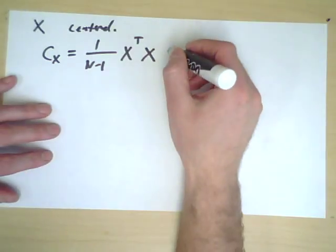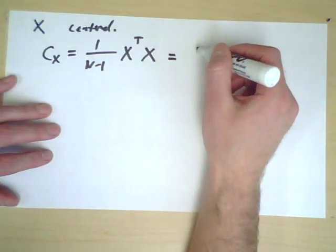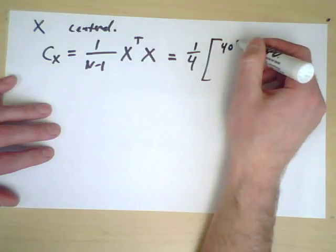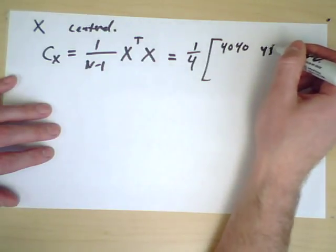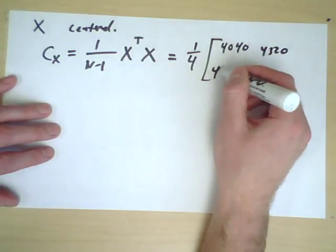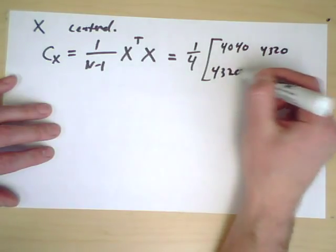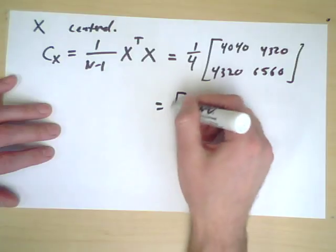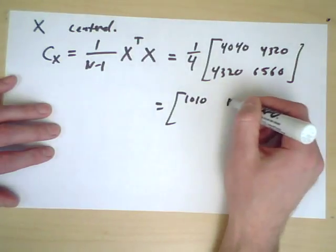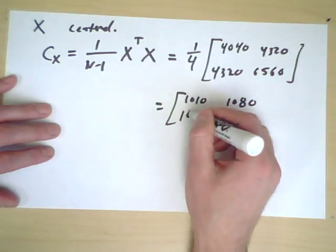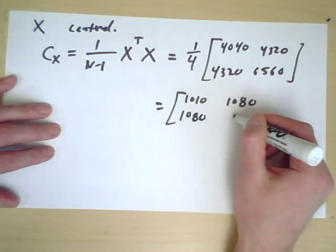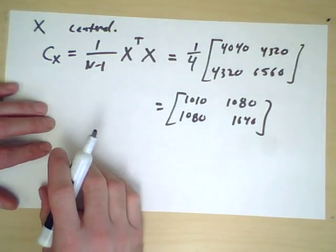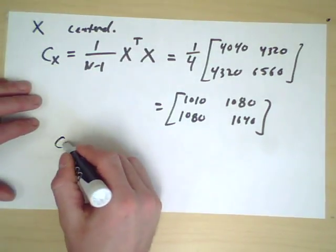In this particular example, I'll let you check that this ends up being 1/4 of the matrix: [4040, 4320; 4320, 6560], which gives us the covariance matrix [1010, 1080; 1080, 1640]. This is called the covariance matrix.